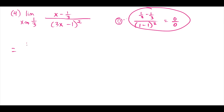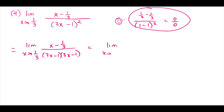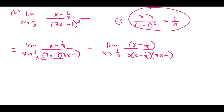We'll evaluate this by expanding the bottom. We have (x minus 1/3) on top, and the bottom is (3x minus 1) times (3x minus 1). I'll factor a 3 out of one factor on the bottom, leaving 3 times (x minus 1/3) times (3x minus 1). The (x minus 1/3) on top and bottom cancel, leaving the limit as x approaches 1/3 of 1 over 3(3x minus 1).